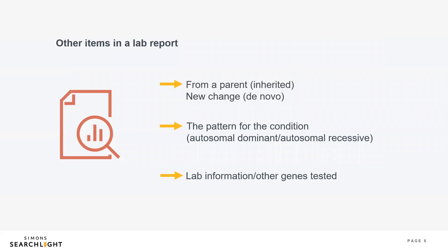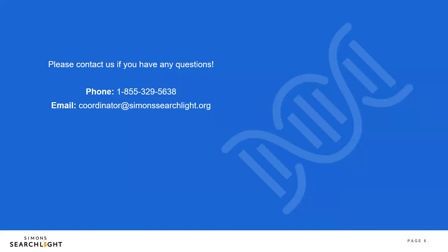Other information on your lab report might include the parameters the lab used for the test or other genes they looked at. As you know, these reports are often several pages long. We hope this has been helpful in making more sense of your child's report and giving some meaning to the complicated terms. If you have any additional questions specific to your child's report, please reach out to us and one of our genetic counselors will be in touch.